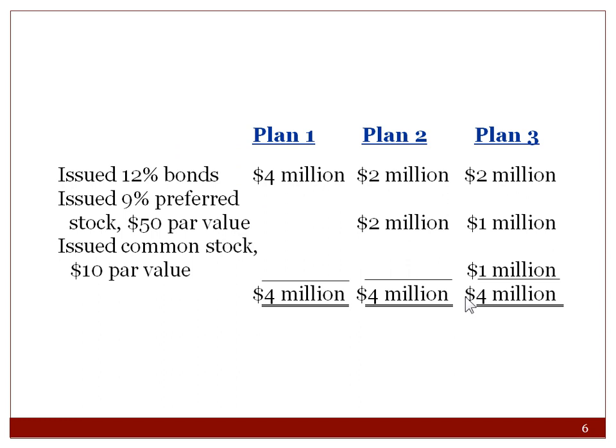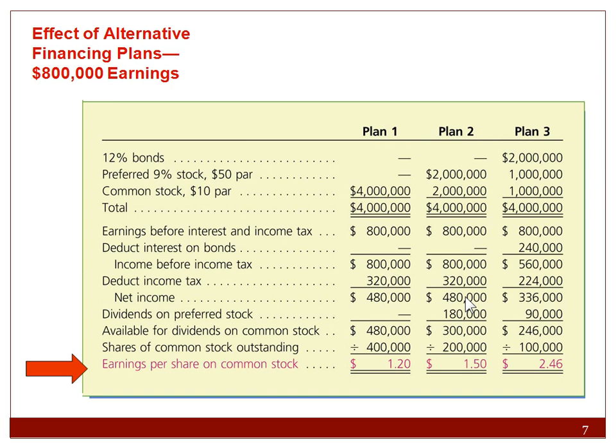Here are three different plans with different issuances all adding up to four million dollars. Plan one was just bonds, plan two was a mix of preferred stock and bonds, and plan three had common stock, preferred stock, and bonds. From the previous lectures we talked about earnings per share, so this shows you the different plans and what happens to the earnings per share on common stock. Companies have to keep this in mind — there are lots of ways for companies to get financing, and here's an overview of what it does to the earnings per share.